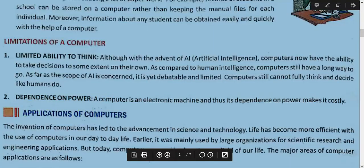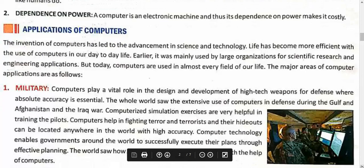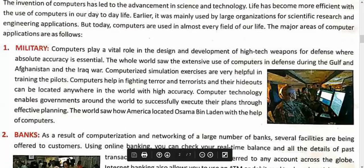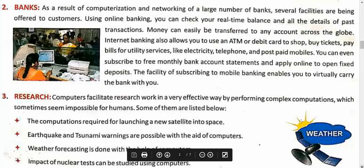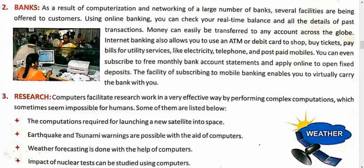Now where is this computer used? First use is in the military — design and development of high-technology weapons, for defense purposes. Next use is in banks — in any bank you go to, every person has a computer in front of them. They are connected with everything online, seeking every data in the computer. Earlier they had to search files, but now everything is there — ATM machines, all running on computer.